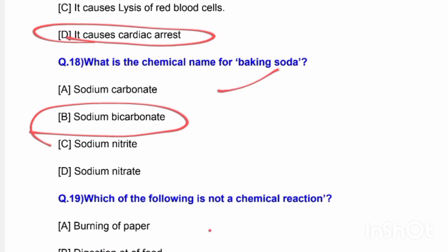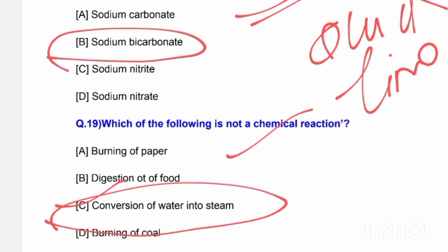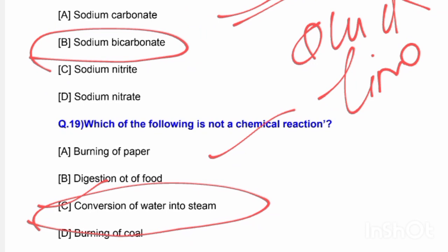Questions 18 and 19 are repeated frequently in HP TET exams. You need to understand the types of chemical reactions — combination reaction, displacement reaction, double displacement reaction, and redox reaction — and be able to identify how a chemical reaction occurs.